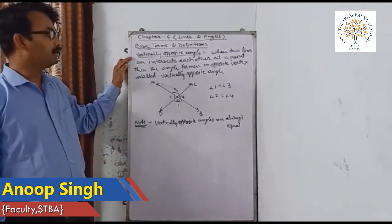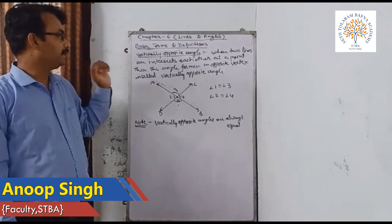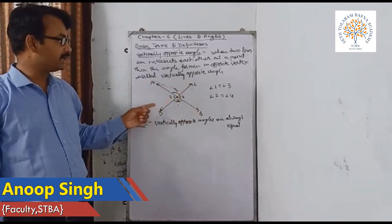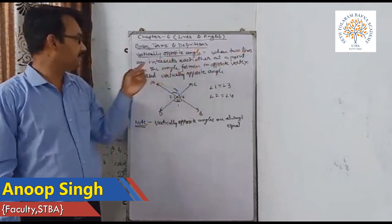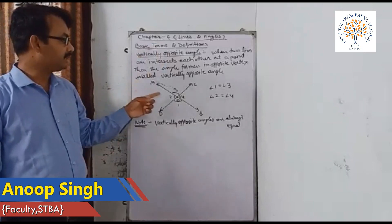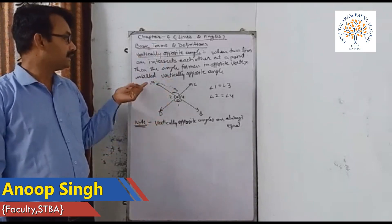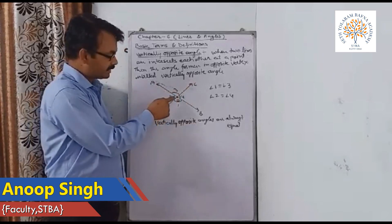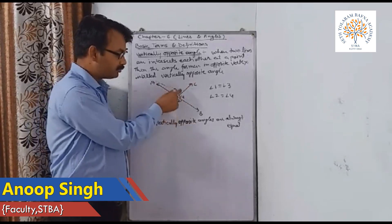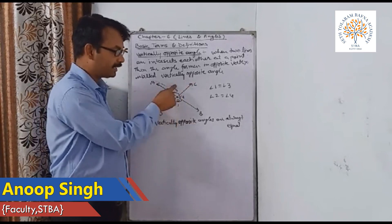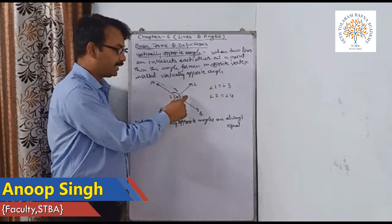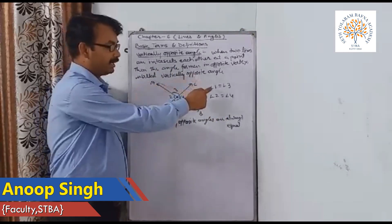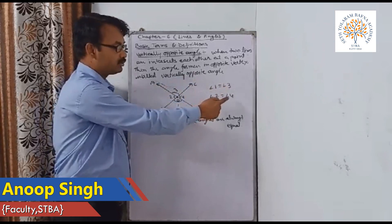Vertically opposite angles: when two lines intersect each other at a point, the angles formed by the opposite vertices are called vertically opposite angles. For example, lines AOB and COD intersect at point O. Angles 1 and 3 are vertically opposite, and angles 2 and 4 are vertically opposite. Note that vertically opposite angles are always equal: angle 1 equals angle 3, and angle 2 equals angle 4.